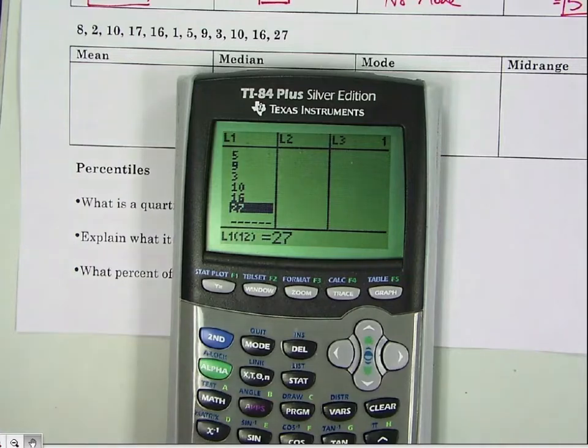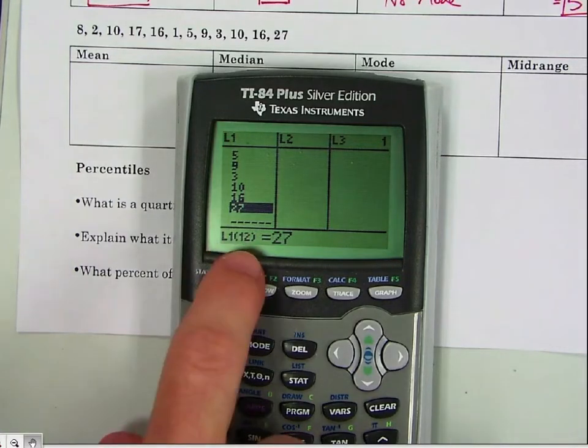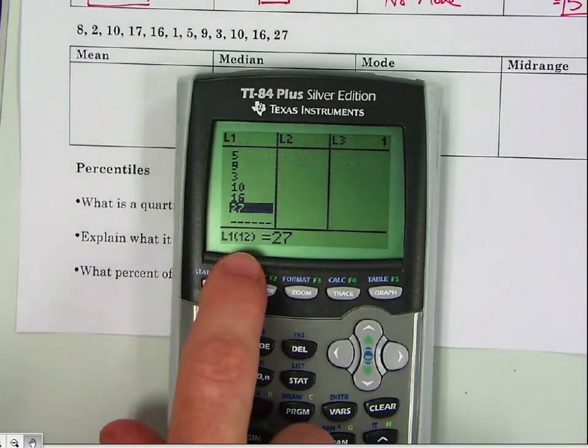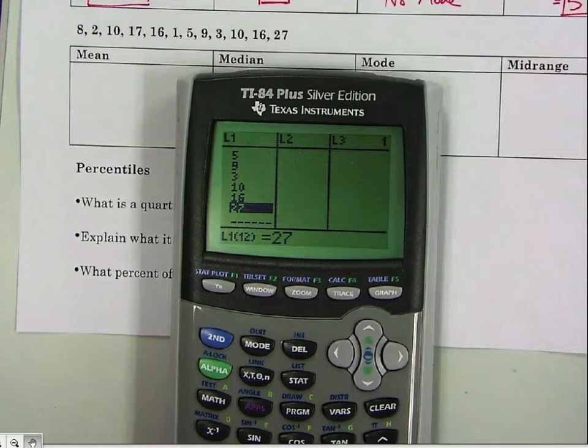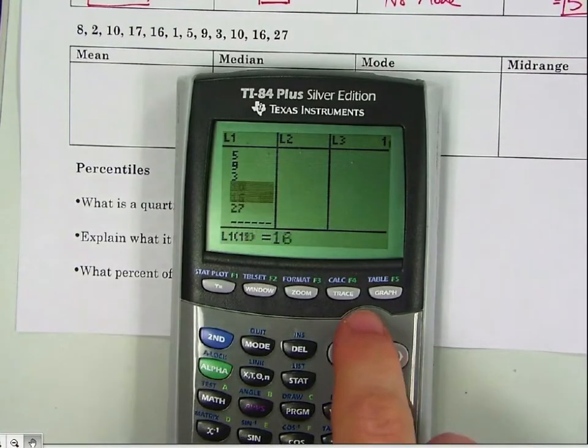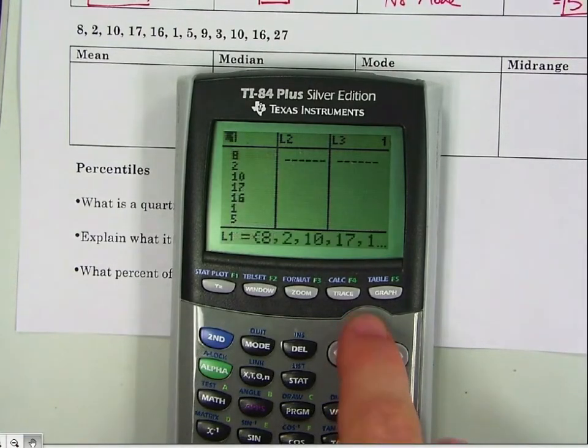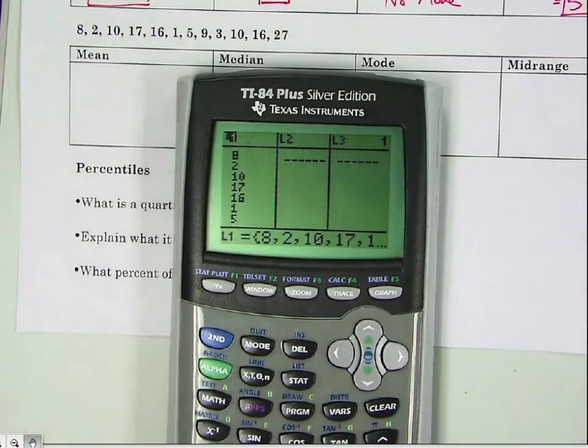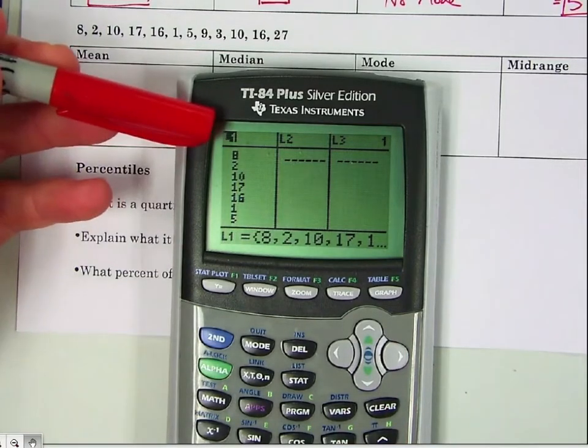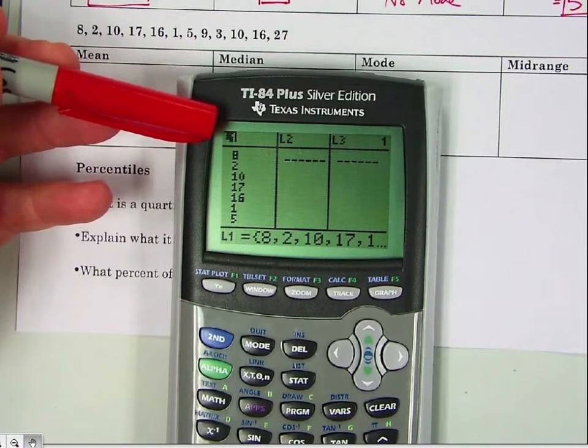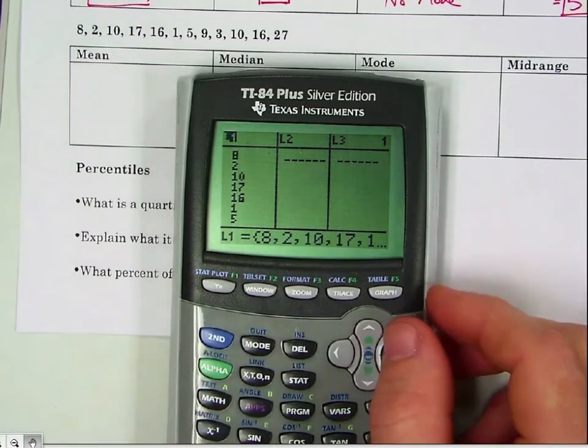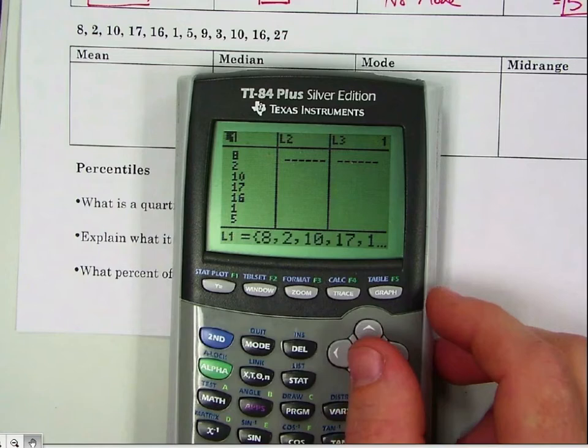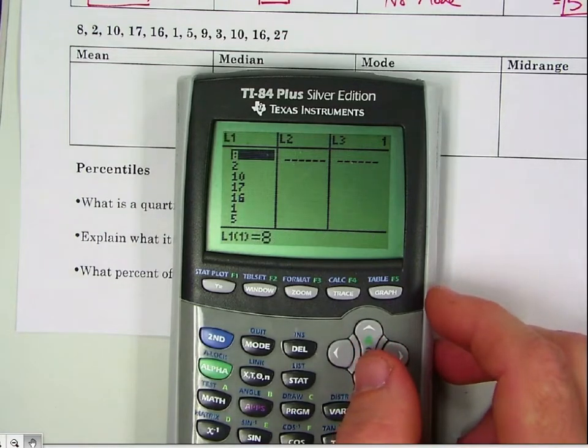So just looking at this, we see L1, and this is data piece number 12. So that tells me there's 12 pieces of data. If you count them up, you'll find out that there are 12. If you go all the way up to the top, to L1, you'll notice now it puts it in a set notation. So all of our data now is in L1.